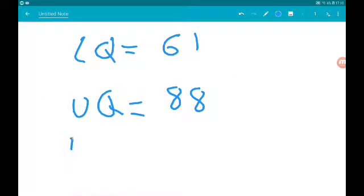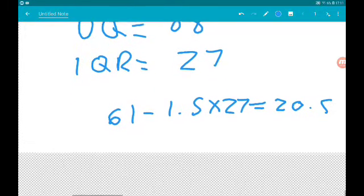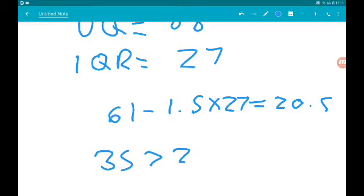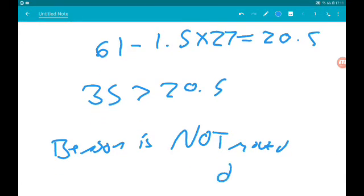That means the interquartile range is 88 take 61, which is 27. Now, 61 minus 1.5 times 27 gets us 20.5. 35 is bigger than 20.5. So Benson is not moved down.